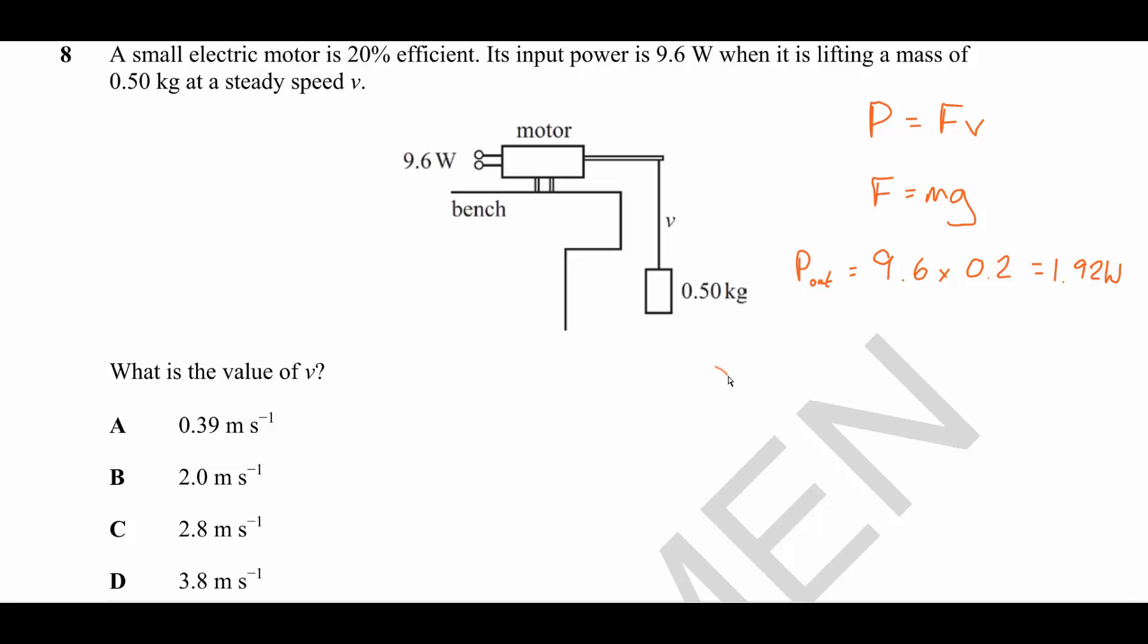So let's finally rearrange to get V. V is equal to the power divided by the force. Power is 1.92. The force is MG, which in this case is 0.5 multiplied by 9.81, which gives us an answer of 0.39 meters per second, which is answer A.